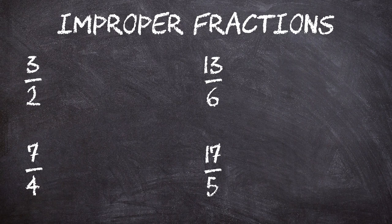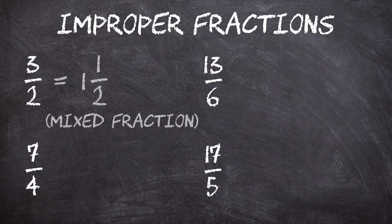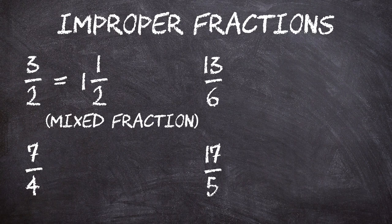Well, if we want to, we can turn improper fractions into so-called mixed fractions. For example, three over two is the same as one and a half. Just as a note, there's nothing wrong with using improper fractions — mathematically speaking, they're just as valid as a mixed fraction. But in real life, people typically don't go around saying 'I just ate three halves of a pizza.' They would normally say 'I just ate one and a half pizzas.' So mixed fractions are easier to understand in real-life situations.